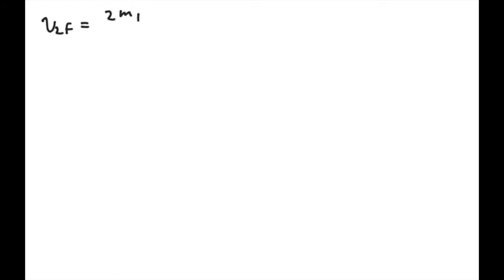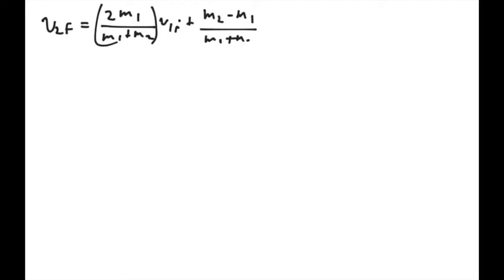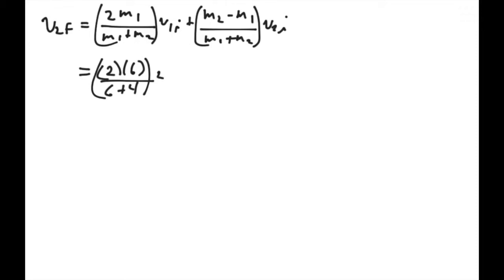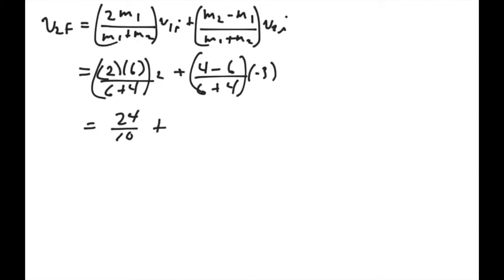Let's take a look at the final velocity of mass two. V2 final is 2 times mass one over mass one plus mass two, times V1 initial, plus mass two minus mass one over mass one plus mass two, times V2 initial. That gives us 2 times 6 over 10 times 2, plus 4 minus 6 over 10 times negative 3. So we have 24 over 10 plus negative 2 times negative 3, which is 6 over 10, giving us 30 over 10, or 3 meters per second.